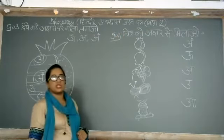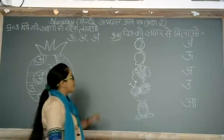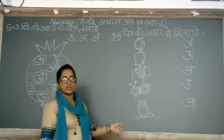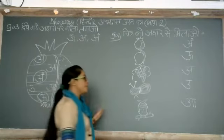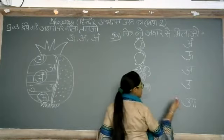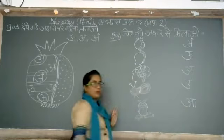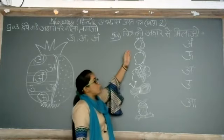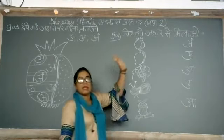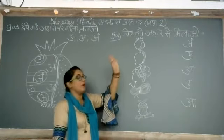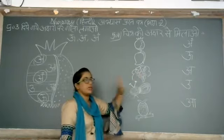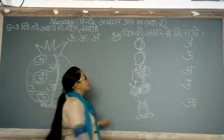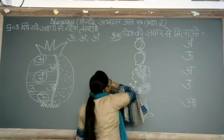Chitr ko akshar se milao. Ismein ek side mein chitr diye huye hain. Aur usse related akshar uske saamne wali row mein likhe huye hain. So humein chitr ko pehchanna hai ki kiska hai, aur usi ke similar akshar se humein match karna hai.